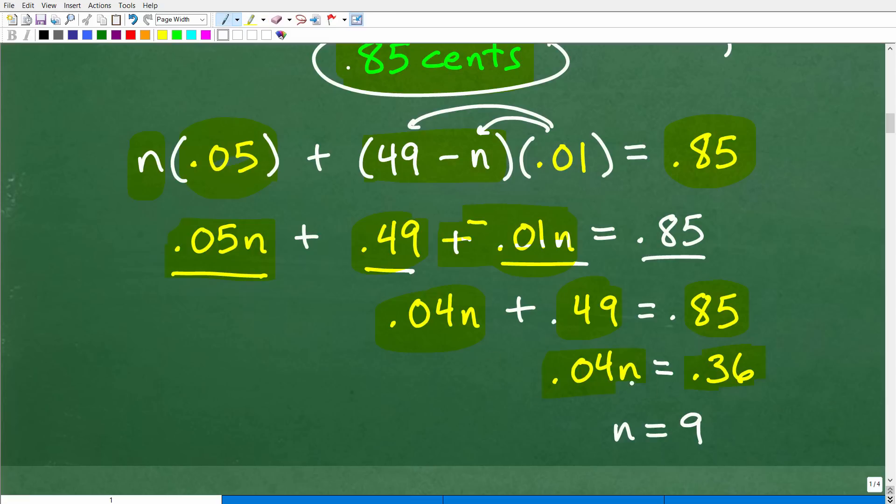How do we solve for N? We're simply going to divide both sides of the equation by 0.04. So in your calculator, you're going to go 0.36 divided by 0.04. And you end up with a nice integer value, N is equal to 9.